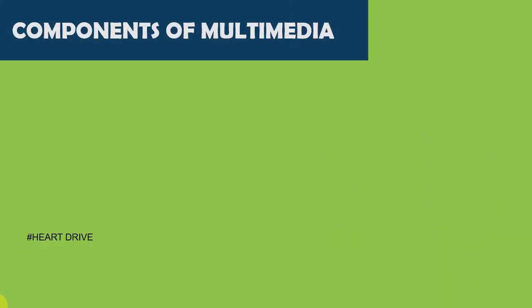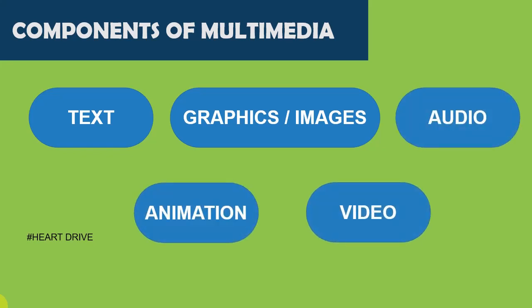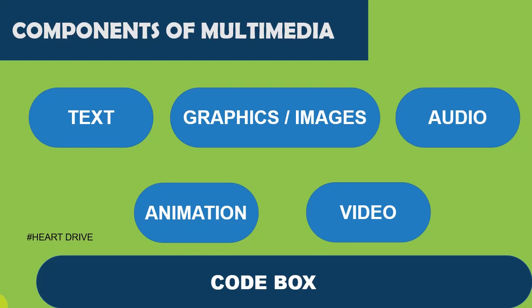In the last class, we saw the five components of multimedia, which are text, graphics (also called images), audio, animation, and video. Whenever you study something relevant to types or categories, you should use a code to remember it so that you can write it properly during exams. So here I have a code box for you to remember this. Let's check our code box.